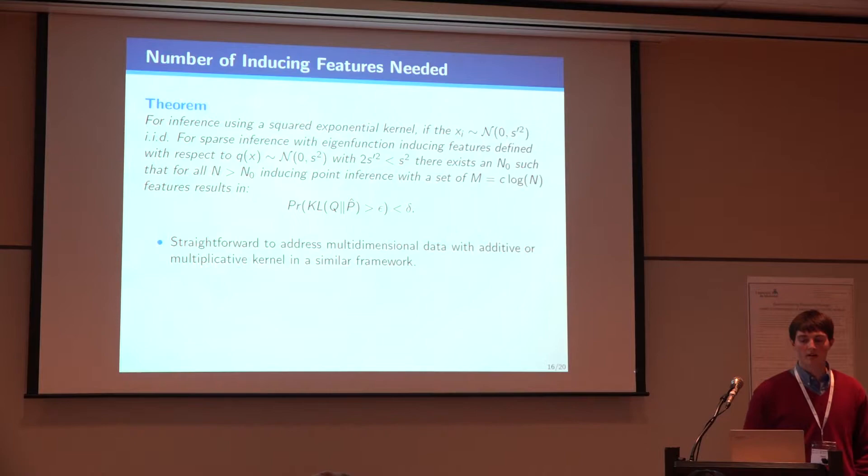The main theorem we prove in terms of the number of features needed is that if your goal is to approximate a squared exponential kernel and the data is drawn IID from some normal distribution, then if you find eigenfunction-inducing features with the right variance, you just need some constant times the log of the amount of data you have. And you can get this epsilon-delta where your KL divergence is small with high probability. I've stated everything for one-dimensional data, but if you assume your kernel is additive or if you assume it's separable, it's relatively straightforward to extend. Although, I should say that for the separable kernel, it's something like log N to the D. So it's going to scale exponentially in the dimensionality of the data.